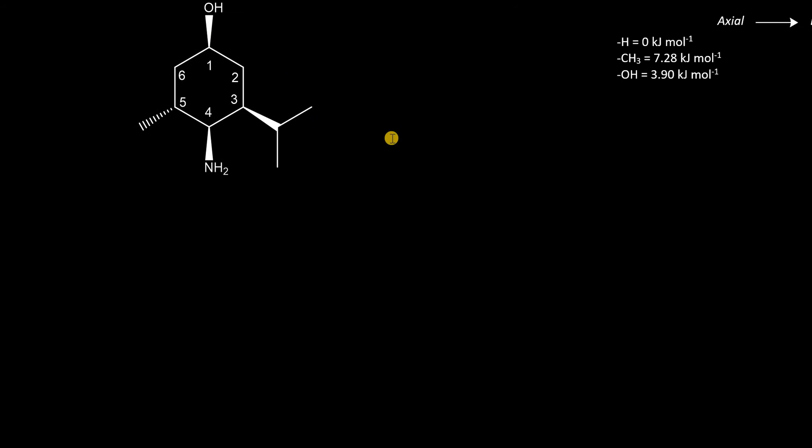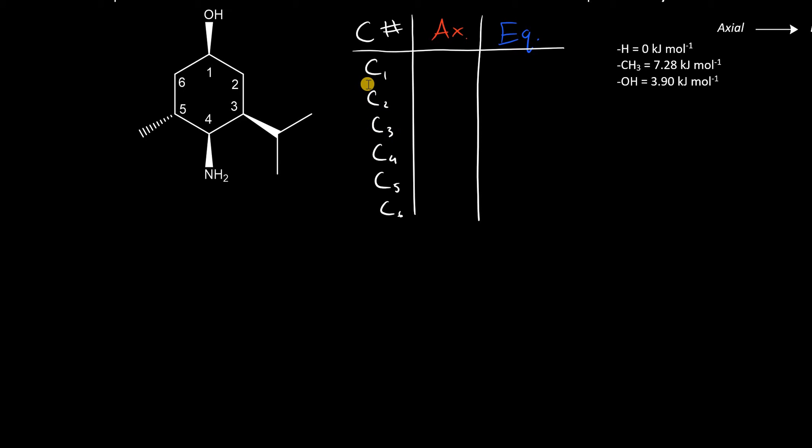Before we draw in our chair conformations, we just need to understand that axial and equatorial bonds are always alternating in cyclohexane. For instance, at carbon 1, if we have a substituent that's axial up at carbon 1, that means at carbon 2 it will be pointing down, and then up here at 3, and so on.